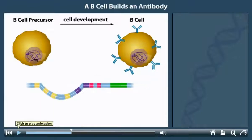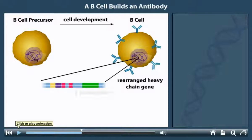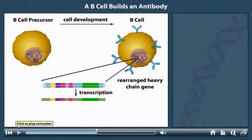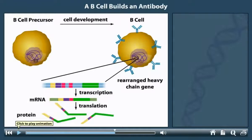As the immunoglobulin, or Ig, genes rearrange, the B cell matures and the Ig genes are expressed. Note that the heavy chain gene still contains intervening DNA between the V, D, J segment and a constant segment. These intervening sequences are left in the DNA but spliced out from RNA after the gene is transcribed. The mRNA is translated into the Ig heavy chain.